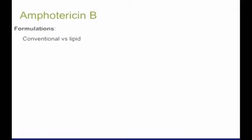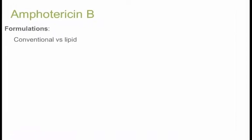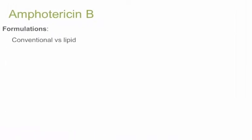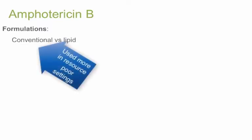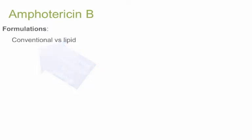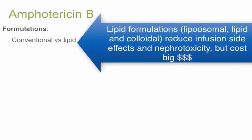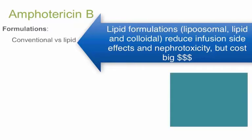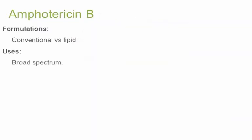The older conventional deoxycholate Amphotericin B formulations from the 1950s have been by and large replaced by newer, but much more expensive, lipid formulations. The three different lipid formulations available each allow for larger doses to be given with significantly reduced infusion-related side effects and less long-term nephrotoxicity.